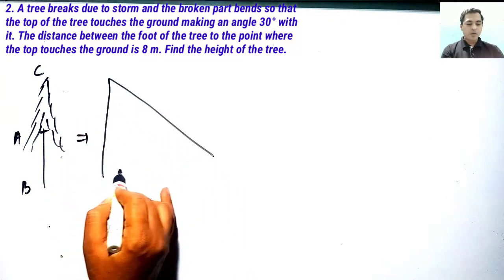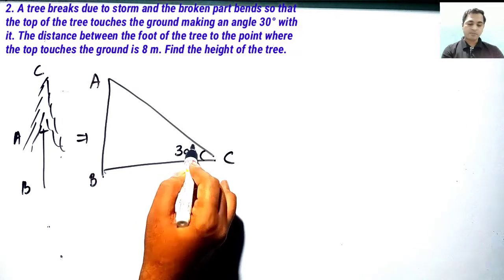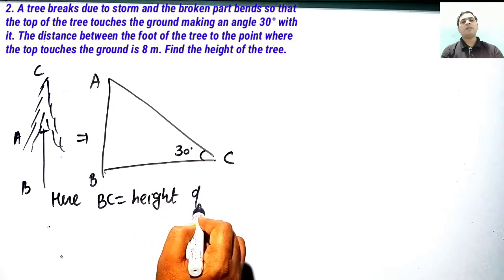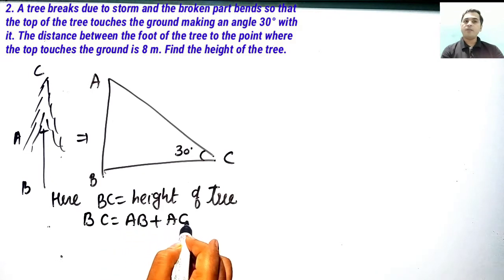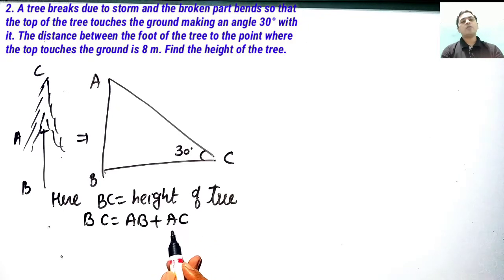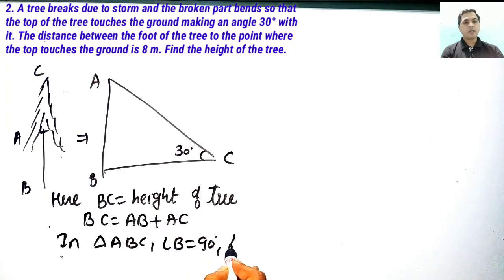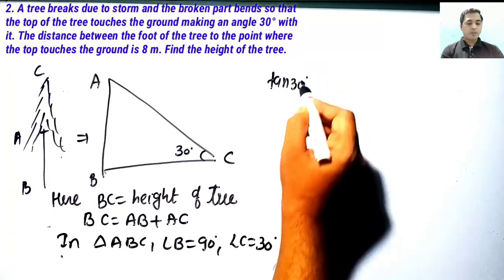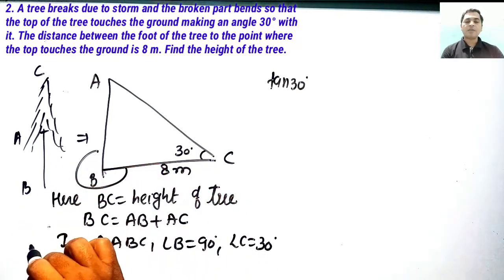The tree breaks from point A, its top touches the ground making a 30 degree angle. BC equals AB plus AC, since BC is the total height. The distance between the top and foot of the tree is 8 meters. In triangle ABC, angle B is 90 degrees and angle C is 30 degrees. Our target is to find the values of AB and AC. BC is the base equal to 8 meters. We use tan theta since tan theta equals altitude by base.